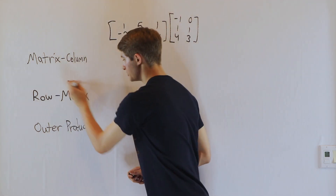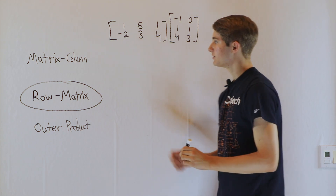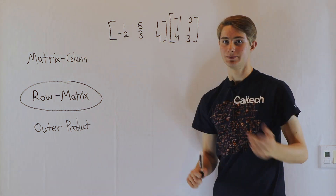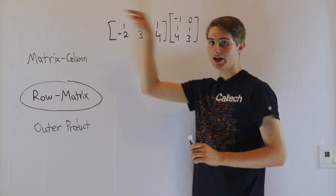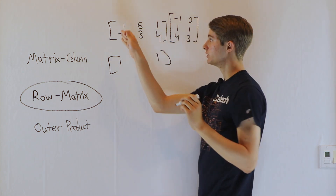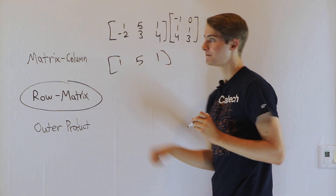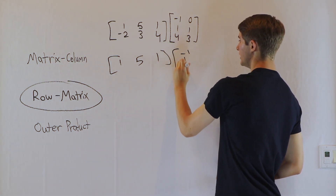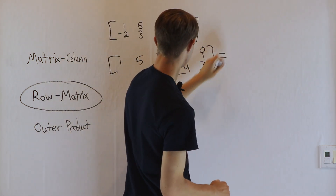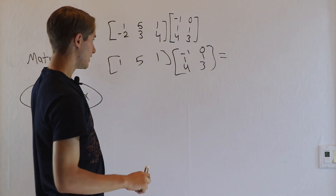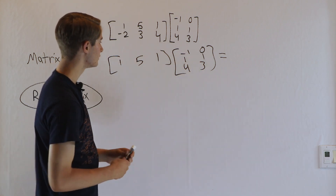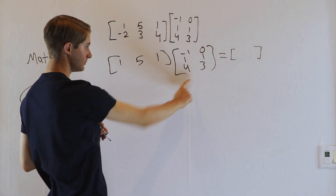Next up we're going to look at the row matrix expansion of the product. The matrix column expansion was looking at particular inputs into the right matrix and splitting up the columns. This time we're going to consider each output from the left matrix separately. To do that we're going to split this matrix up into its rows, because each row corresponds to a particular output — x or y. So first we're going to take the top row and multiply it by the entire matrix on the right. We have one output and two inputs from these columns, so our result is going to be a 1 by 2 matrix.